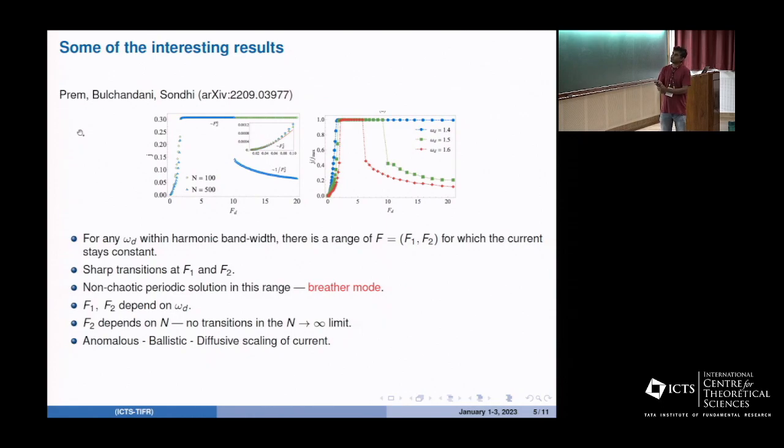These are results from this paper - current as a function of driving force for two different system sizes, green for 100 and blue for 500. As you increase the force, initially there's gradual increase of the current, then beyond some critical force it stays flat. For the smaller system it stays flat for very long driving force, but for larger system size the force suddenly drops and it decays with increasing force. The most interesting result is that over a range of driving force the current stays completely constant. There are sharp transitions at F1 and F2 forces.